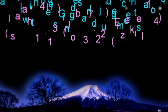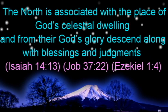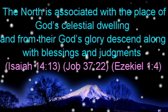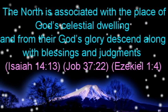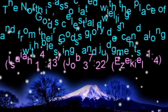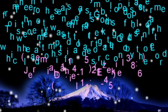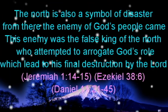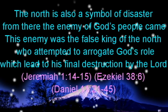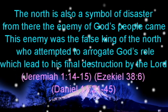The north is associated with the place of God's celestial dwelling, and from there God's glory descends along with blessings and judgments. Read Isaiah 14 verse 13, Job 37 verse 22, and Ezekiel 1 verse 4. The north is also a symbol of disaster; from there the enemy of God's people came. This enemy was the false king of the north who attempted to arrogate God's role, which led to his final destruction by the Lord.